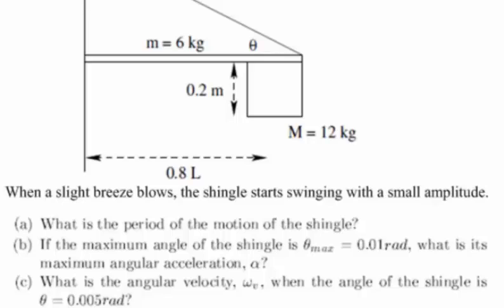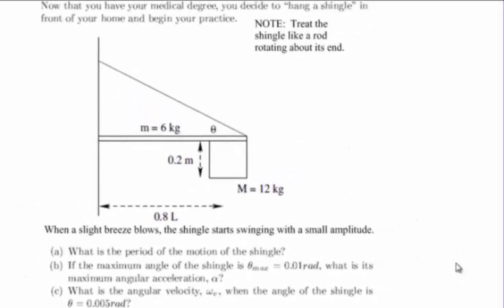What is the angular velocity when the angle of the shingle is 0.005 radians? All of the questions in this problem are about simple harmonic motion, so despite the fact that the figure looks familiar, we need to recognize that this is a simple harmonic motion problem.